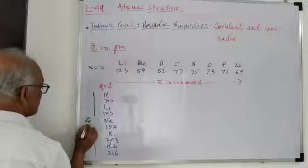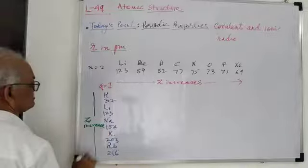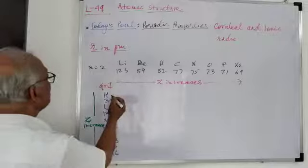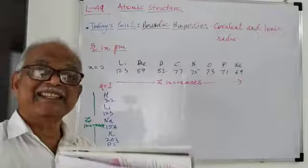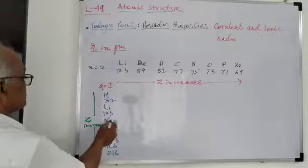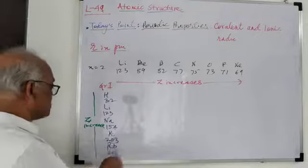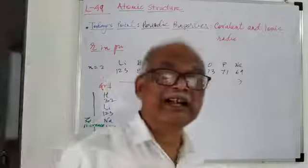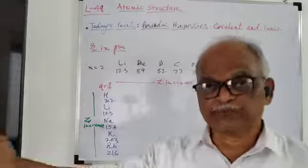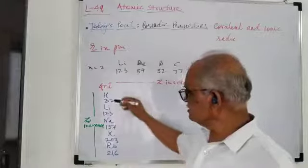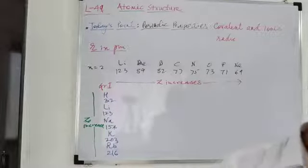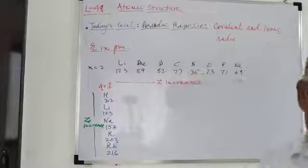With increasing nuclear charge, new energy levels are opened. In hydrogen, the main shell is n = 1. In lithium, n = 2. In sodium, n = 3. In potassium, n = 4, then fifth and sixth main shells follow. There is addition of new energy levels, and because of this, the electron goes farther from the nucleus. That is why covalent radii are found to be increasing down the group. This periodic trend is observed in every group and every period.